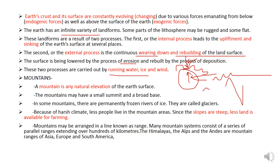A mountain is any natural elevation of the earth's surface. It has a small summit and a broad base. In some mountains, there are permanently frozen rivers of ice called glaciers. Mountains are the source of water. Because of the harsh climate, fewer people live in mountain areas.